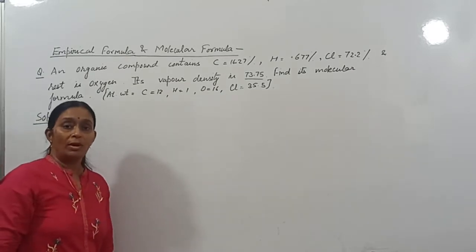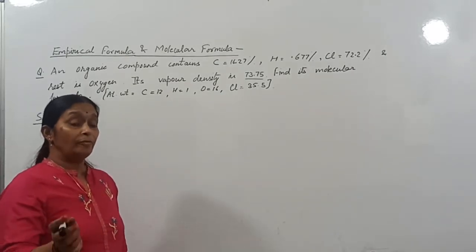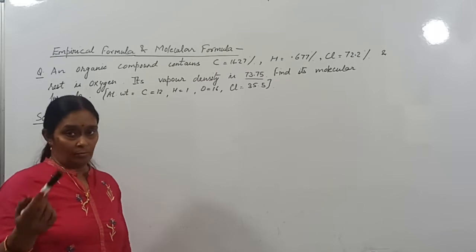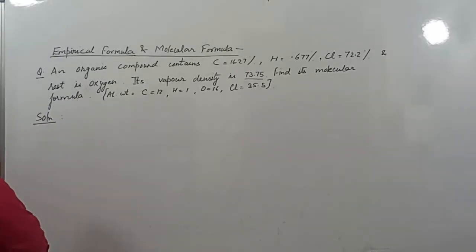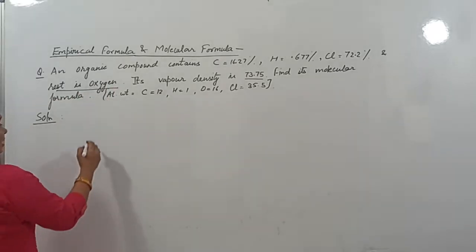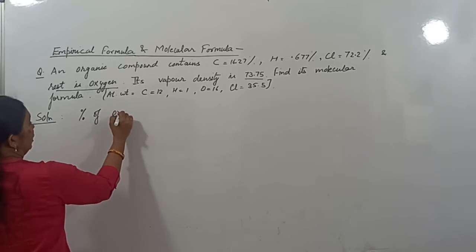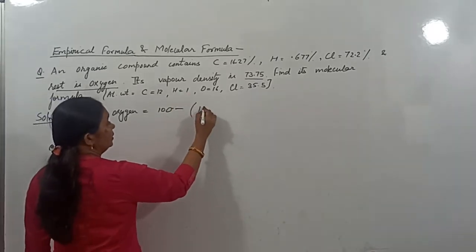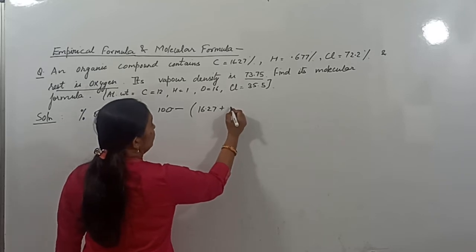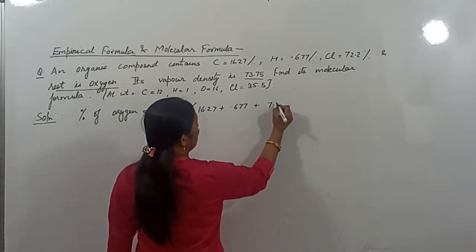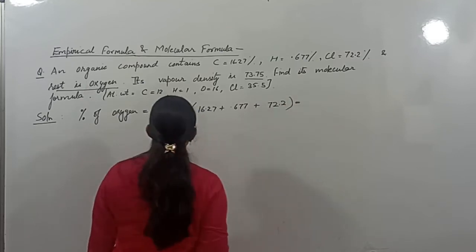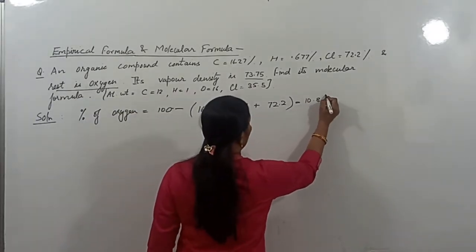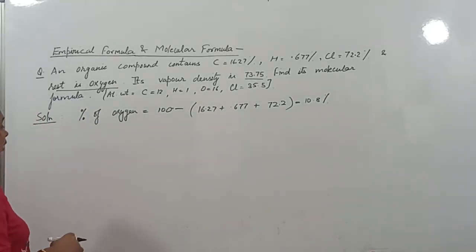Before finding the molecular formula, you have to calculate the empirical formula first. So we will find the percentage of oxygen: 100 minus (percentage of carbon 16.27% plus hydrogen 0.677% plus chlorine 72.2%), which equals 10.8%. So you have now got the percentage of oxygen.